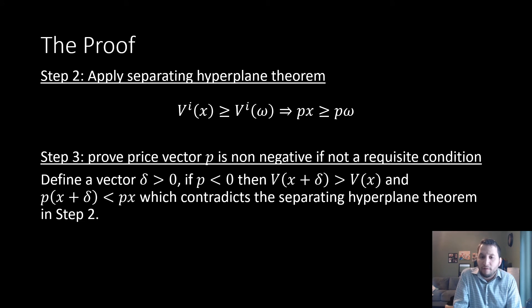Step three is that we prove our price vector p is non-negative if it is not a requisite condition. We do this by defining a vector δ > 0. If p < 0, then it must be that V^i(x + δ) > V^i(x) since this function is increasing in x. And since p is negative, p·(x + δ) < p·x, which contradicts the separating hyperplane theorem. So that means the inequalities we have must be the same according to the separating hyperplane theorem presented in step two.